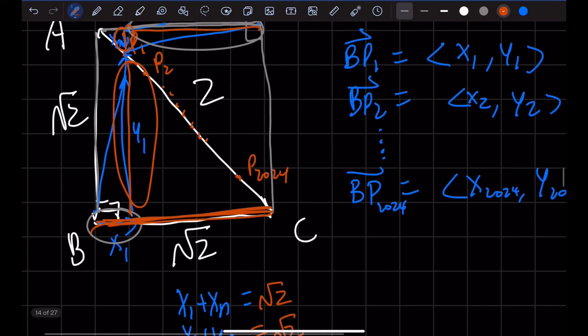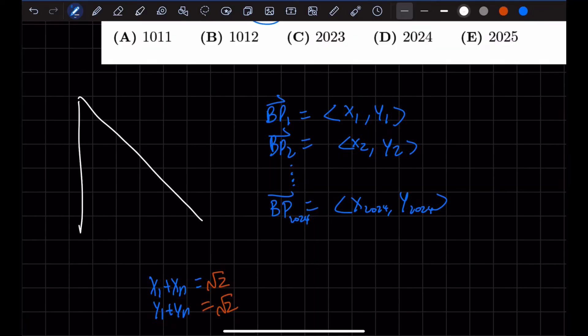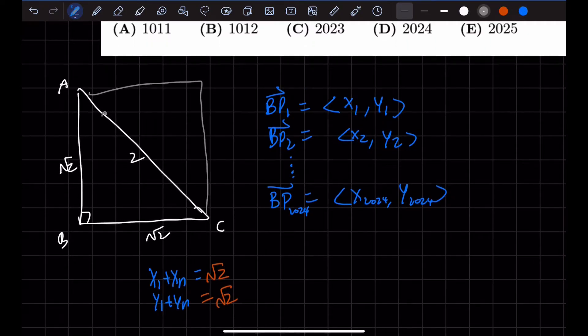But now if we look back at this shape that we drew, how do we know what Xₙ, Yₙ is. So let me just redraw this real quick. A, B, C, √2, √2, this is of length 2. For this dot P₁, let's see what the corresponding dot would be that would give that special property.